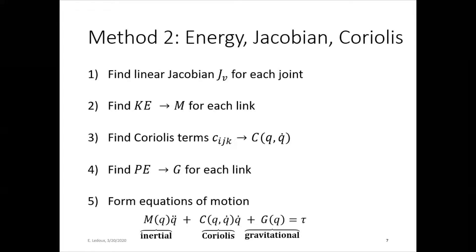Method two combines energy, the Jacobian, and the Coriolis. This has five steps. First, find the linear Jacobian for each joint. Then find the kinetic energy, that gives the M matrix. Find the Coriolis terms, there's a formula for that, gets the C matrix. Potential energy is the G matrix. And finally, put them all together to form equations of motion.